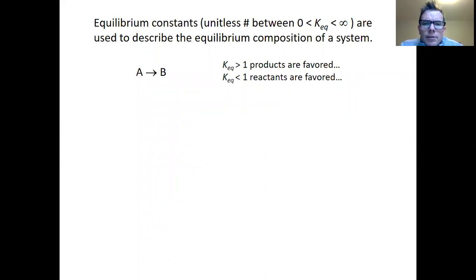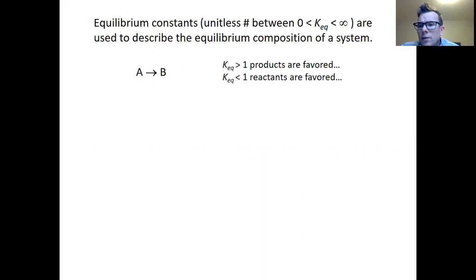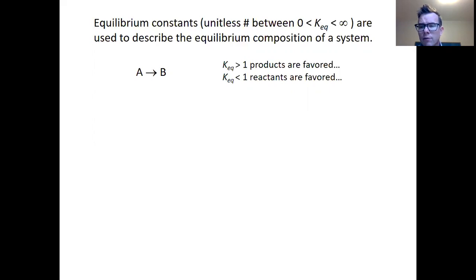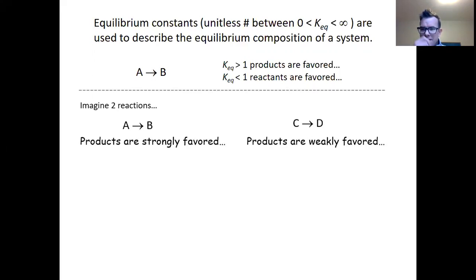I want to start with some GenChem ideas that should be familiar to you. Equilibrium constants are used to describe the equilibrium composition of a system — they're unitless numbers. Specifically, if the equilibrium constant is greater than one, the products are favored; if the equilibrium constant is less than one, the reactants are favored.